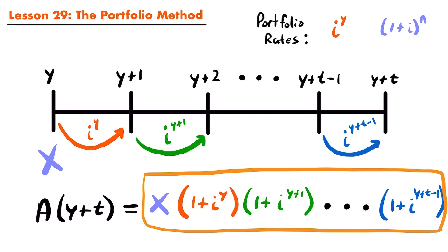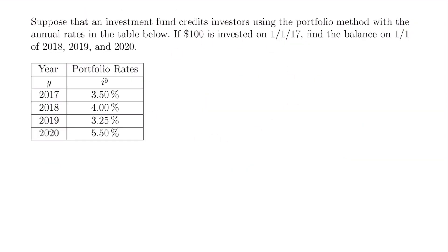That's the basic idea of the portfolio method. To get a better understanding, let's look at some examples where we actually calculate the accumulation of an investment in a fund that uses the portfolio method. Here's our first example: suppose that an investment fund credits investors using the portfolio method with the annual rates in the table below. If $100 is invested on January 1st of 2017, find the balance on January 1st of 2018, 2019, and 2020.